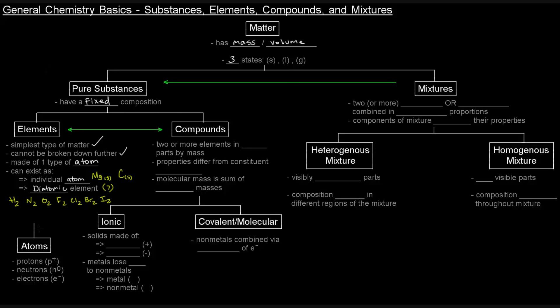Elements are made up of atoms, and atoms have three subatomic particles: protons, which are positively charged; neutrons, which have no charge; and electrons, which are negatively charged. More on that later.